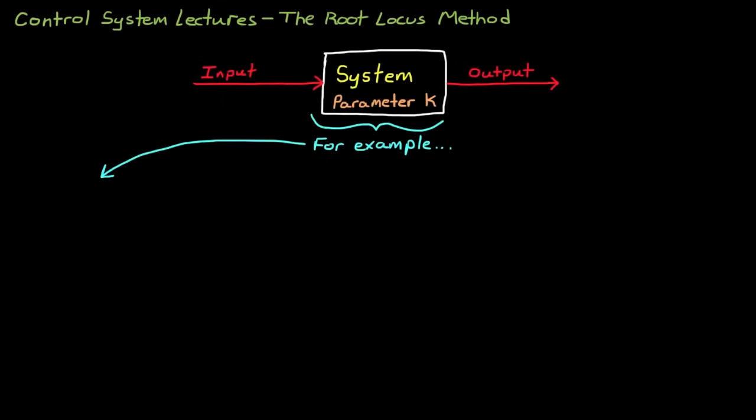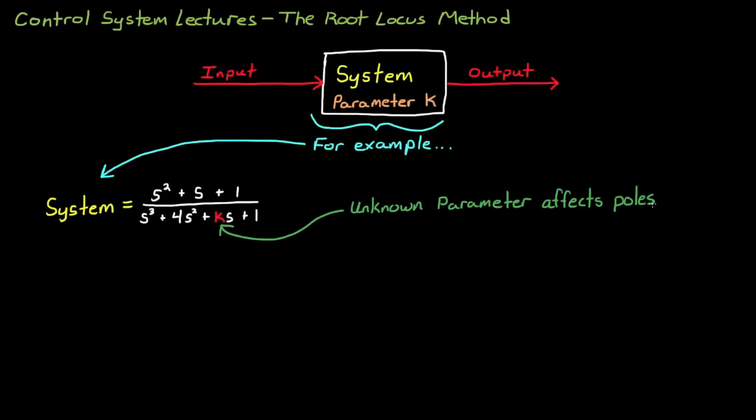Let me show you a quick example of what I mean so that it sinks in. If you have a system that can be described by this transfer function, you can see that there is one unknown parameter, or one unknown coefficient, called k. And you should be able to see that by changing that parameter, you're going to be changing the location of the poles of the system.